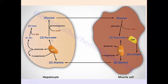Now, what happens to the pyruvate remaining in the liver? Glucose is formed from pyruvate through the process of gluconeogenesis. The pyruvate undergoes gluconeogenesis to form glucose. This process requires 6 ATP, because gluconeogenesis is an anabolic process requiring energy. The glucose formed is then released into the blood, and from the blood it is taken up by the muscles.